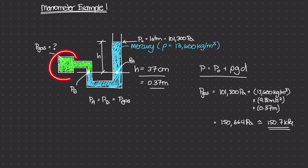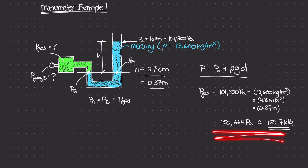Now let's do a follow-up question. Let's look at this chamber filled with gas — what if I attached a pressure gauge to this chamber? This little gauge would read the gauge pressure. What would the gauge pressure be equal to, knowing that the gas pressure was 150.7 kilopascals? Gauge pressure, p_g, is equal to whatever pressure you're measuring minus 1 atm.